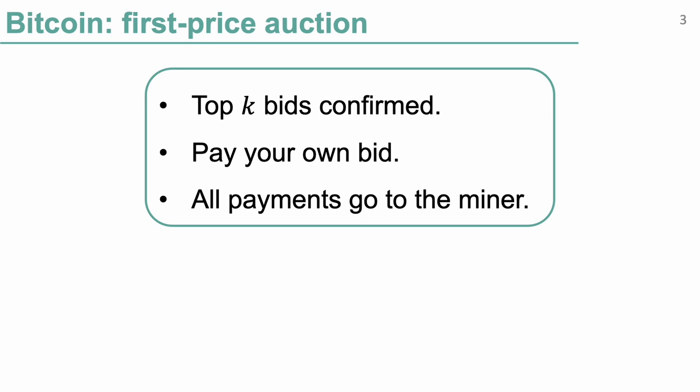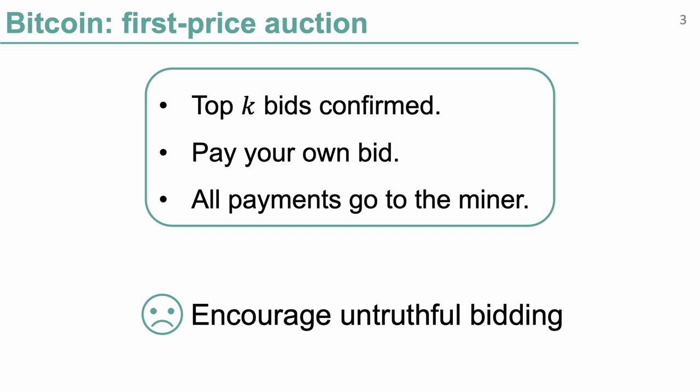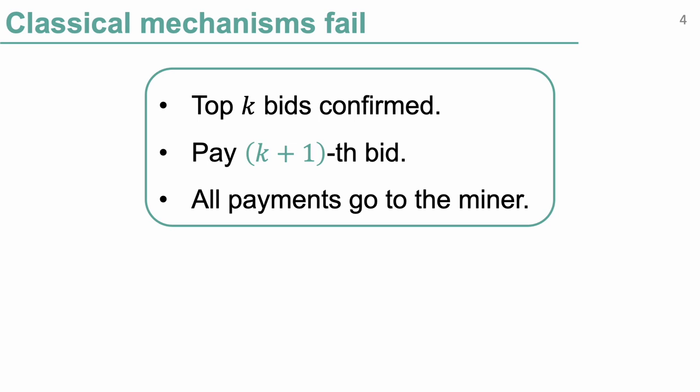However, as we have learned from algorithmic game theory, first-price auction is not good because it incentivizes non-truthful bidding. For example, it may be my best strategy to bid just enough to be among the top-K bids, so I will be confirmed and pay the least possible price. What's interesting is that actually all classical mechanisms we are familiar with fail for the purpose of transaction fee mechanism.